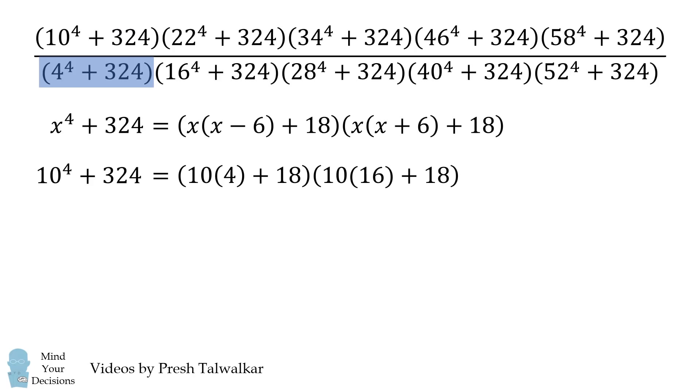Now let's take a look at 4^4 + 324. Here we have x is equal to 4, so we simplify it to get the following. So it seems like we haven't actually made things any simpler, we've actually expanded out each term. But there's a cancellation that'll make things simpler.